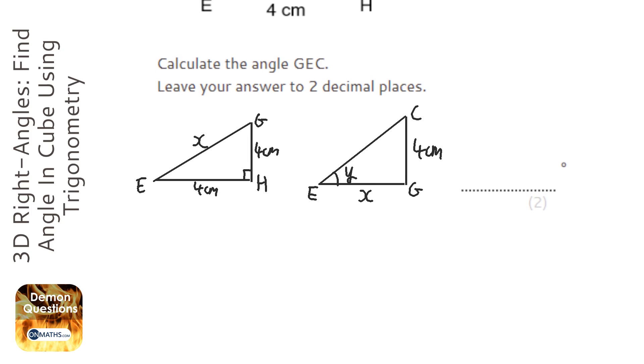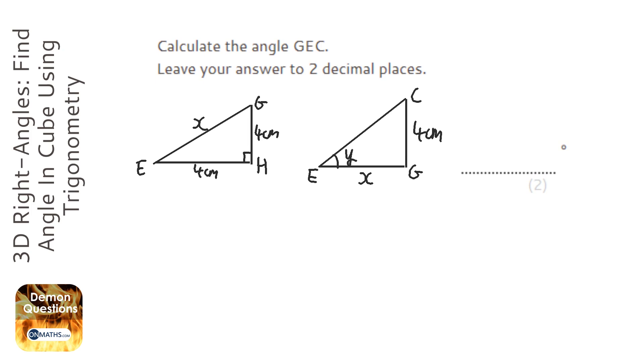To start this off, we're going to find x using Pythagoras' theorem. I'm not going to go into the details, but you'll end up with x equals root 32.